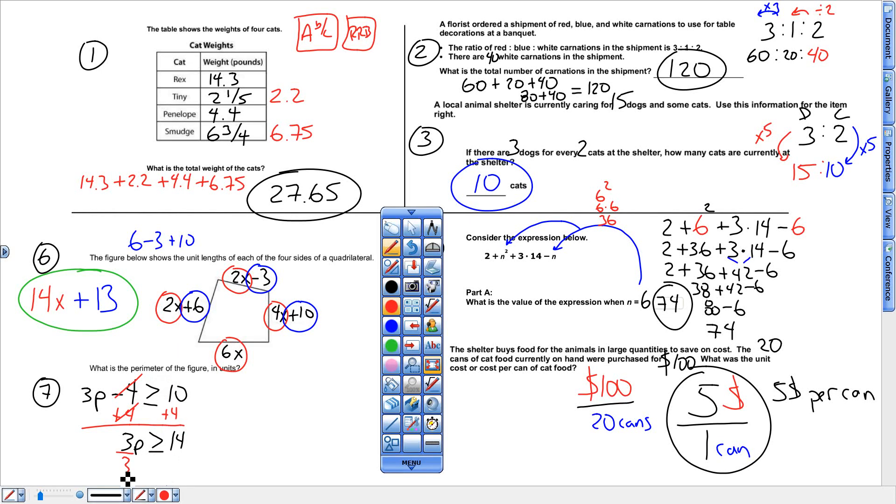And that gives you p has to be more than or equal to at least 4.6. 4.6 with a bar going over it. That means 3 numbers more than 4.6.